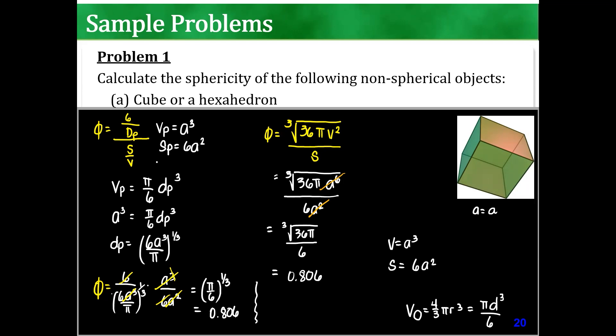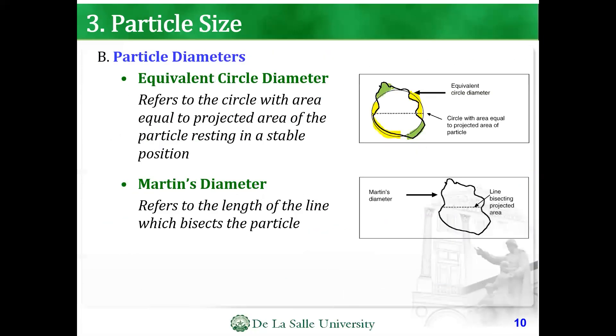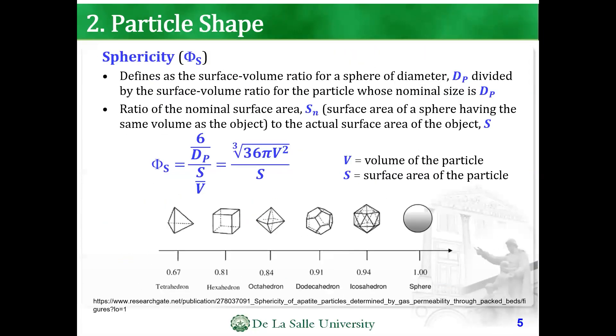This is what I was telling you guys. Because, as per definition, look at the definition here. As per our definition, defined as the surface to volume ratio for a sphere of diameter dp. So, the one on top, it's like for a sphere. What's the equivalent diameter? If it's a sphere, divided by the surface volume ratio of the actual particle. So, divided by this. That's the definition. But, because it was derived, after derivation, we got an easier formula, which is this.